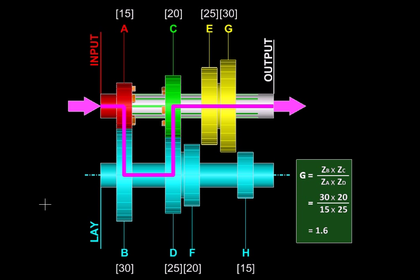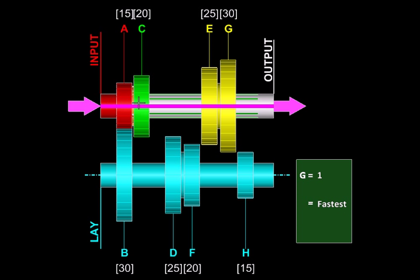To get the top gear or the fourth gear we are going to slide this green gear to the left. So using these teeth, the dog clutch, the green and the red gear will directly engage with each other and in that case the power is going to flow directly from the input to the output shaft.